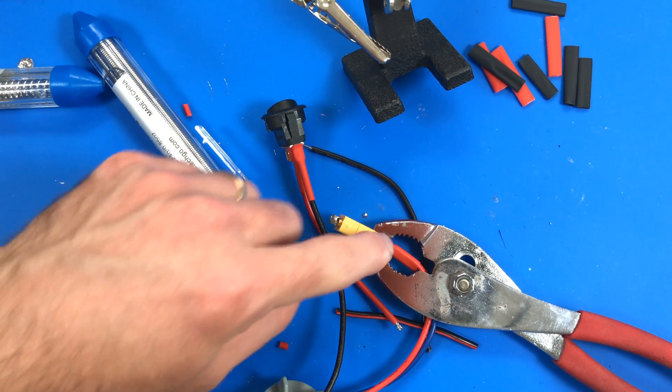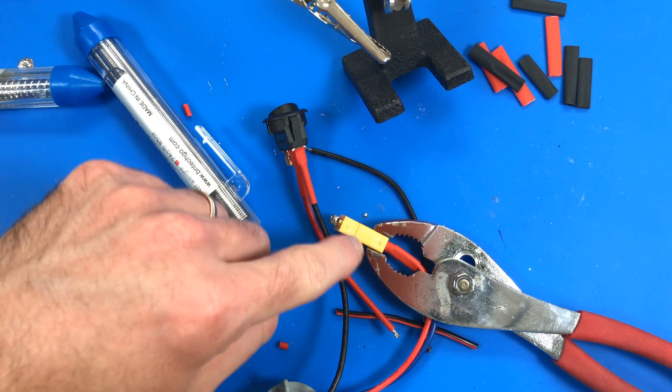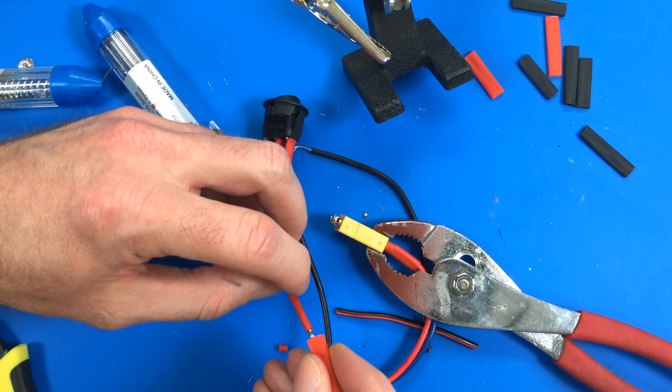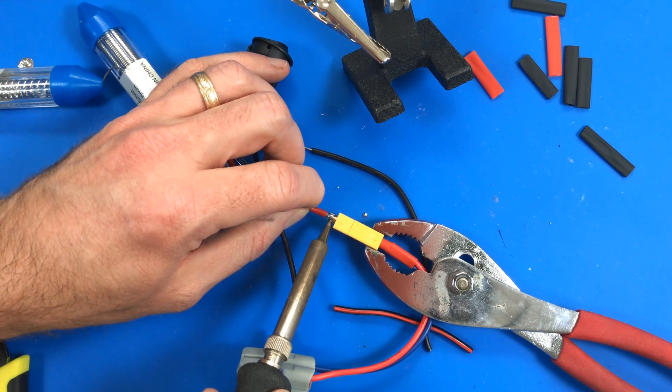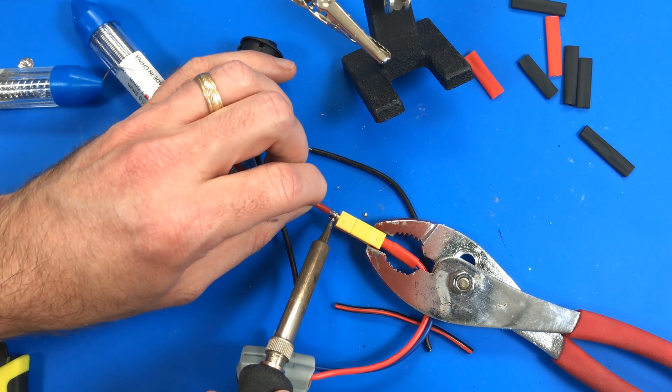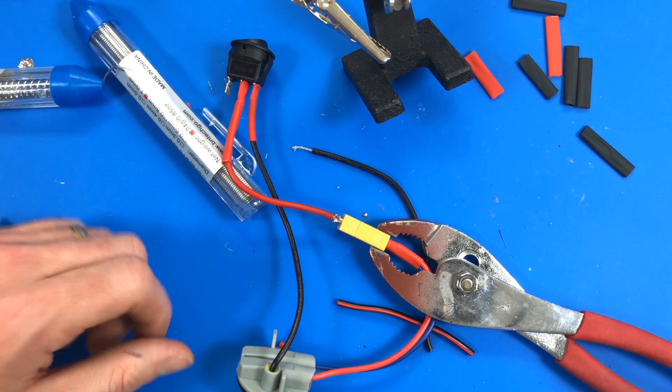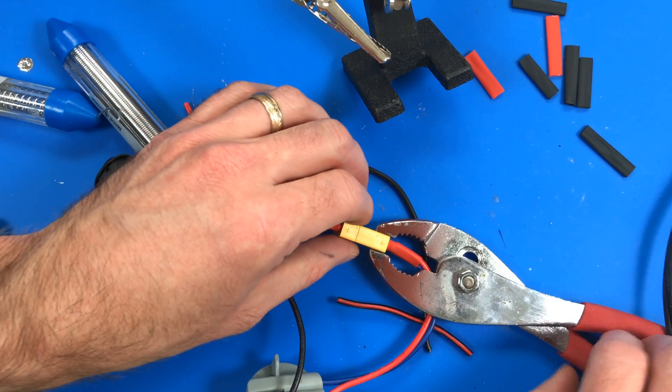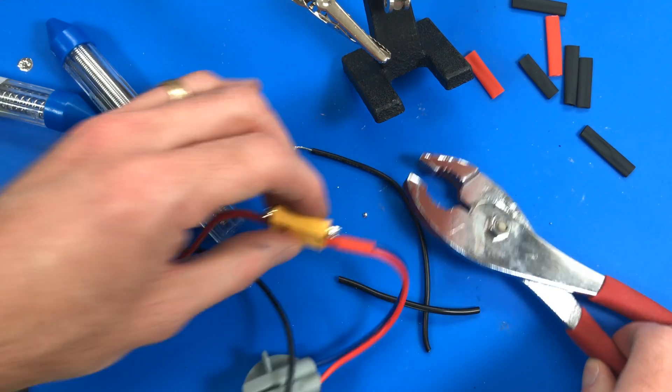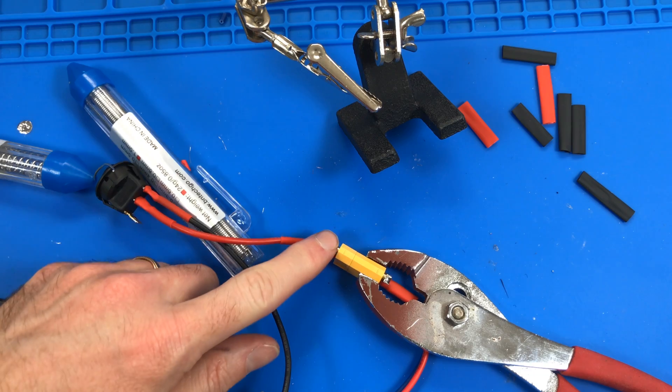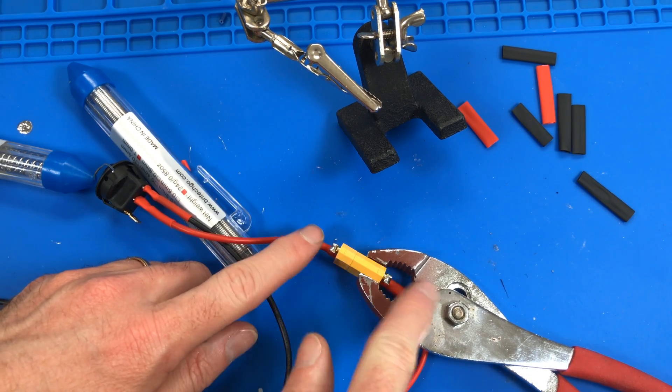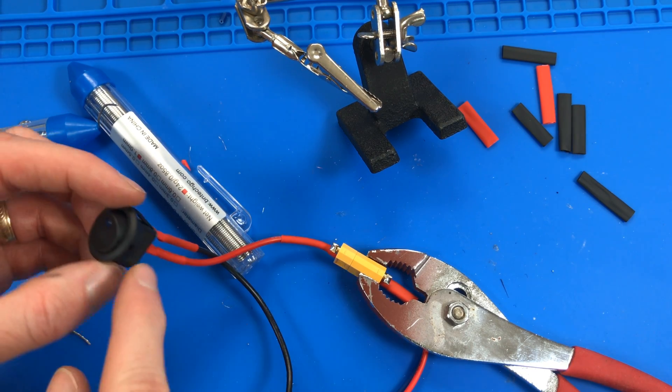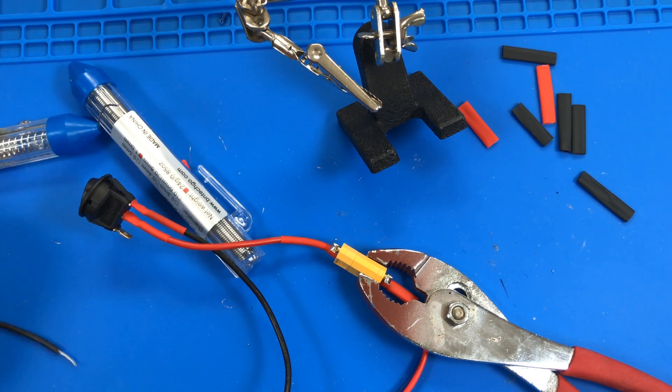Now the other side of that wire goes to the positive terminal on the other side of this connector. So this is the one that will go to the drone. So now the power will go in the battery, through the bulb, through the switch, to the connector on the drone. Now this time I do need to put heat shrink on it before I solder it. So there's one whole half of the connection. Now we just have to do the other half.